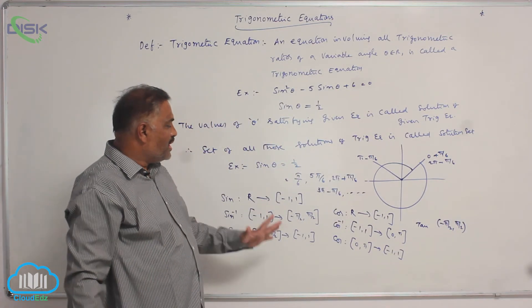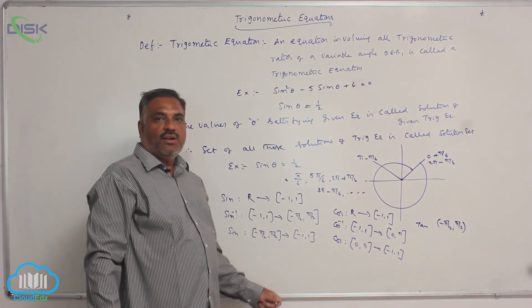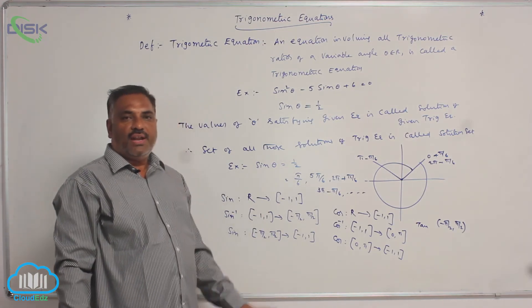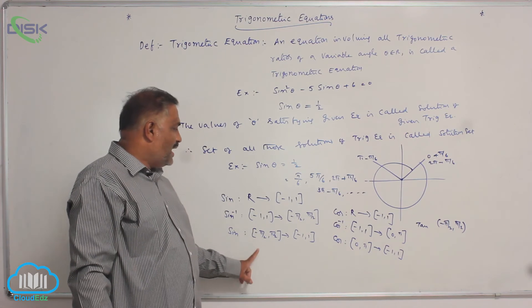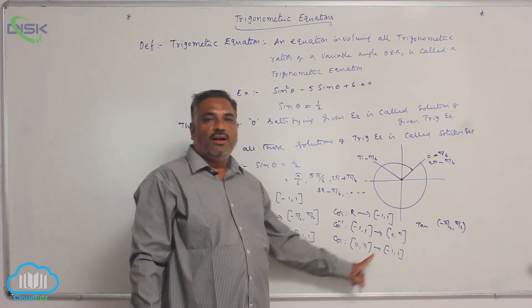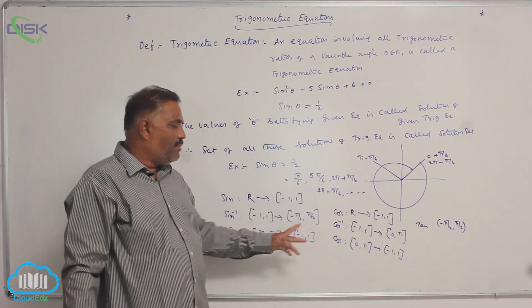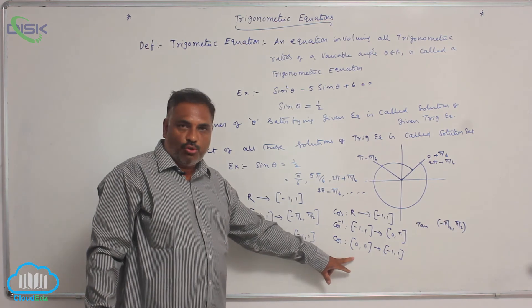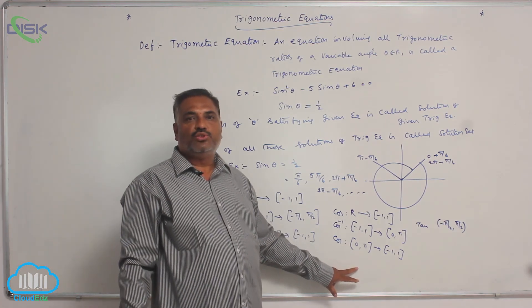In the same way, tangent also has bijectivity on the open interval minus pi by 2 to pi by 2. You should think about the general solution or particular solution for any function, provided they exist not only in the original domain but also in the bijective domain. Now we will talk about the principal solution.